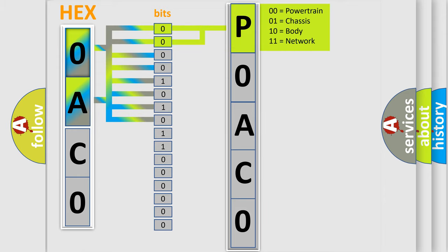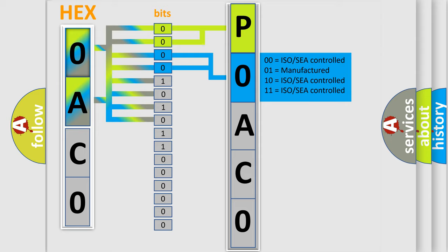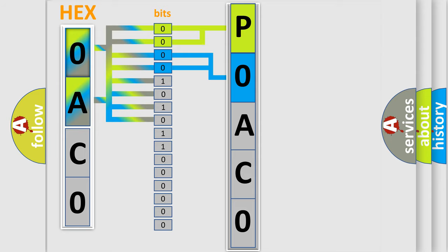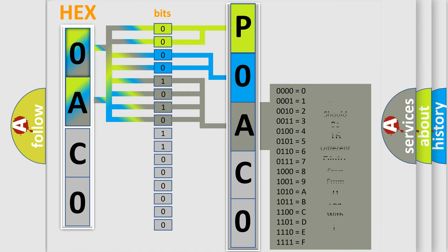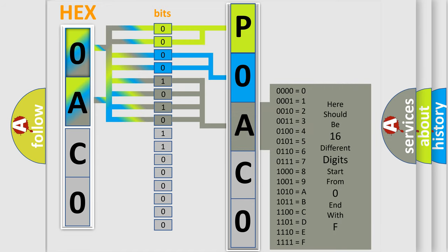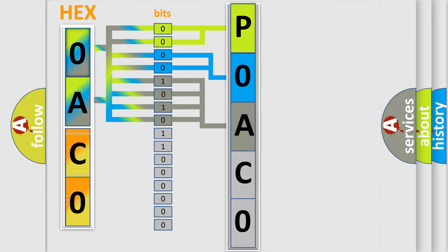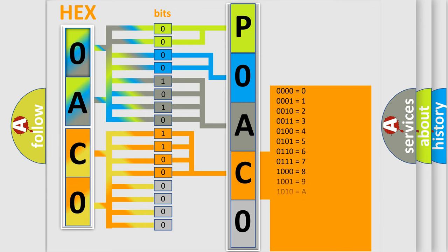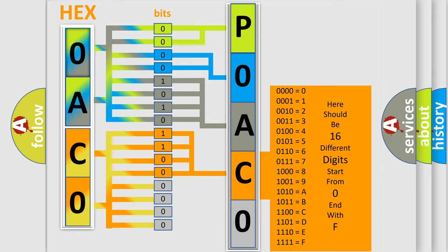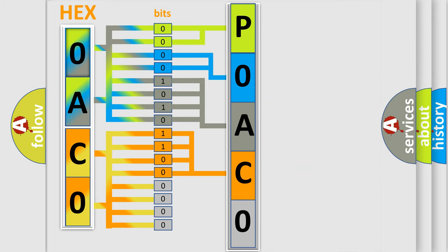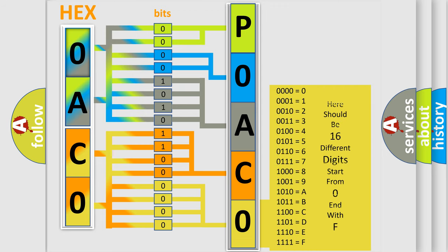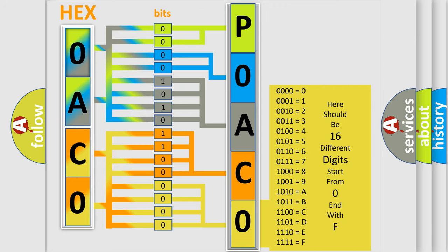By combining the first two bits, the basic character of the error code is expressed. The next two bits determine the second character. The last four bits of the first byte define the third character of the code. The second byte is composed of a combination of eight bits: the first four bits determine the fourth character, and the last four bits define the fifth character. A single byte conceals 256 possible combinations.